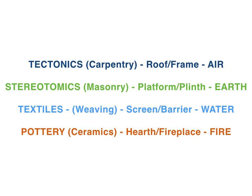Tectonics symbolizes the roof or frame; stereotomics symbolizes the platform, plinth, or podium; textiles symbolizes the screen, curtain wall, or barrier; and pottery symbolizes the hearth or fireplace. Furthermore, each symbol is poetically linked to a natural element: tectonics to air, stereotomics to earth, textiles to water, and pottery to fire.